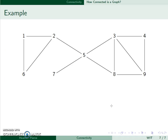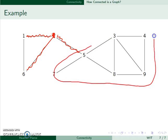For example, here's a picture of a graph. If I remove vertex 2 along with all of its edges, I now have a disconnected graph. I have this piece here, and then this edge over here. So 2 is a cut vertex.